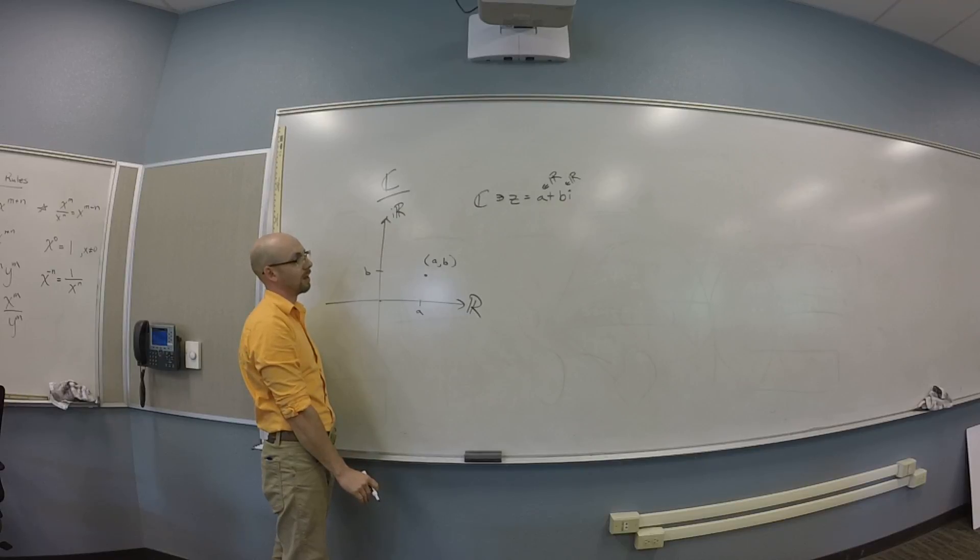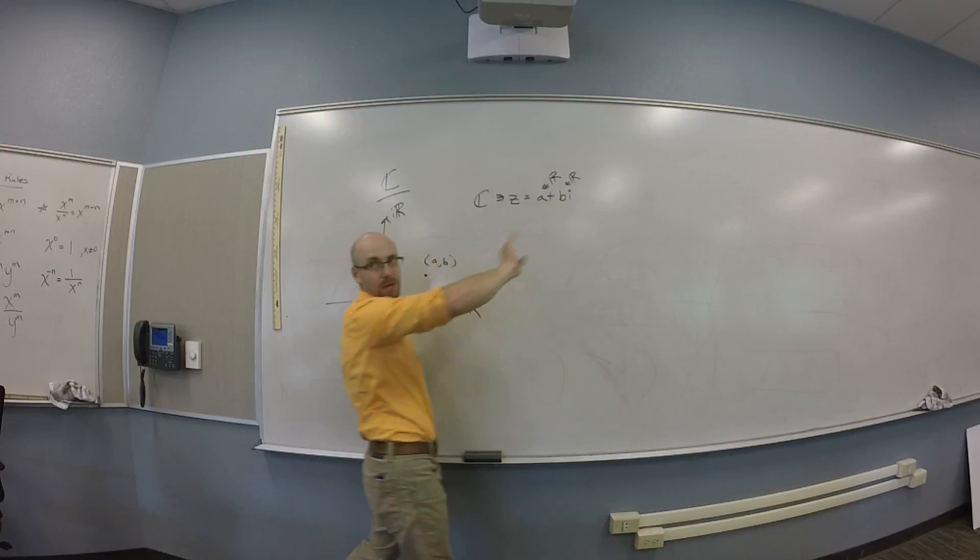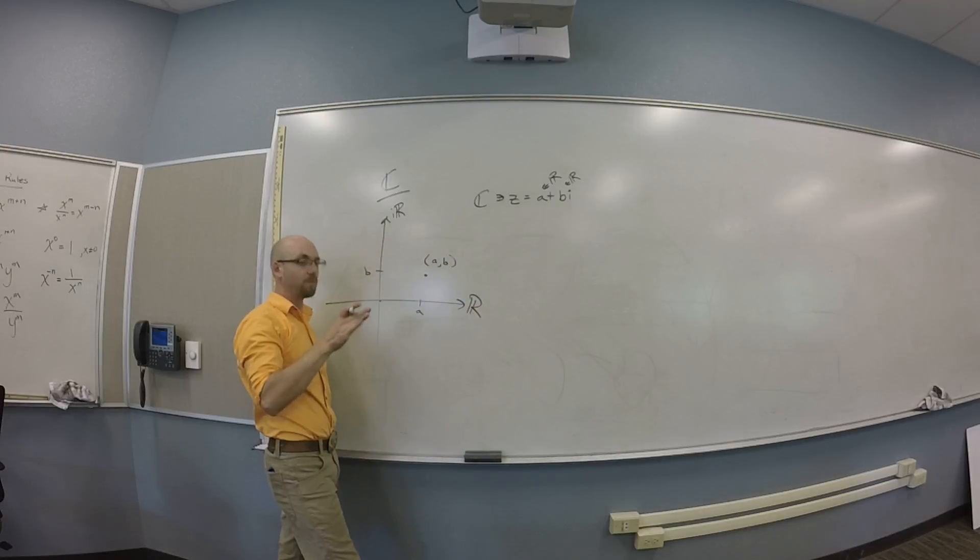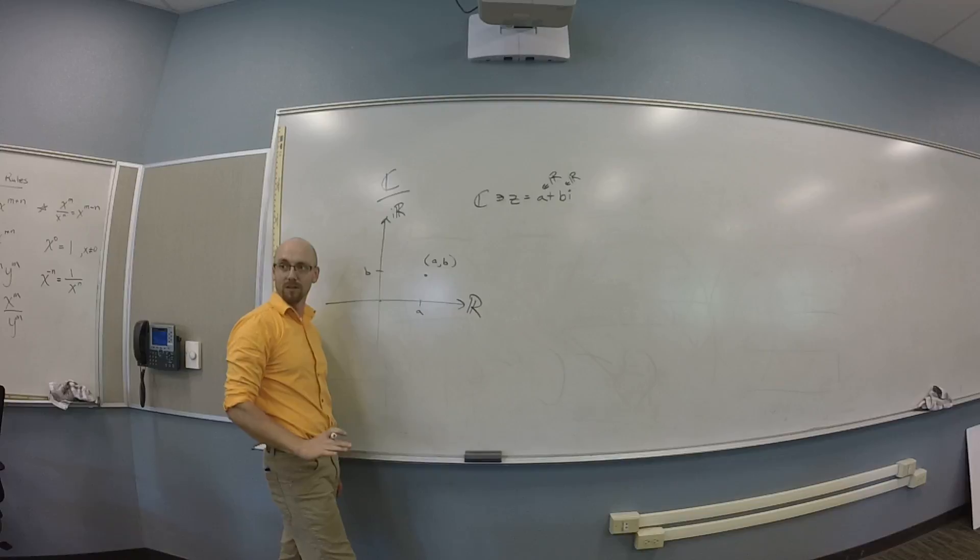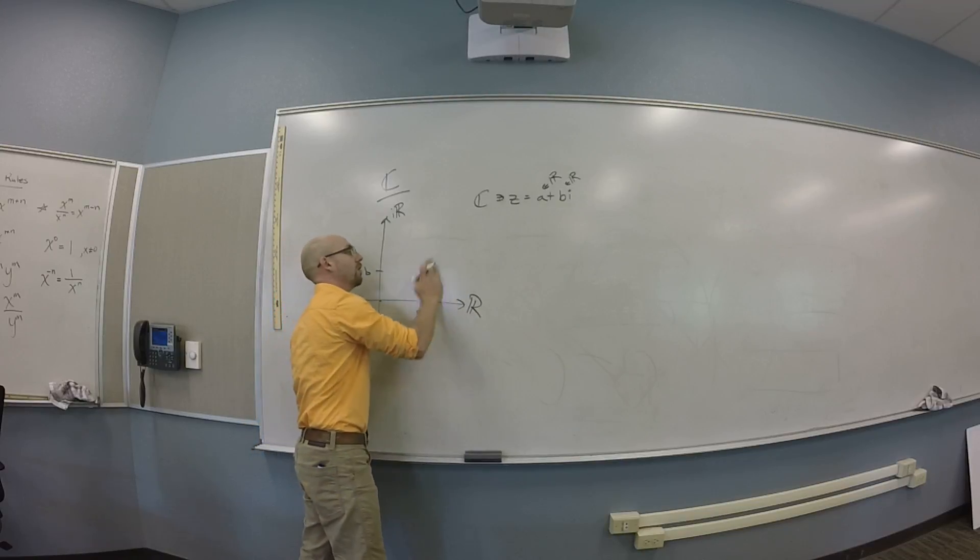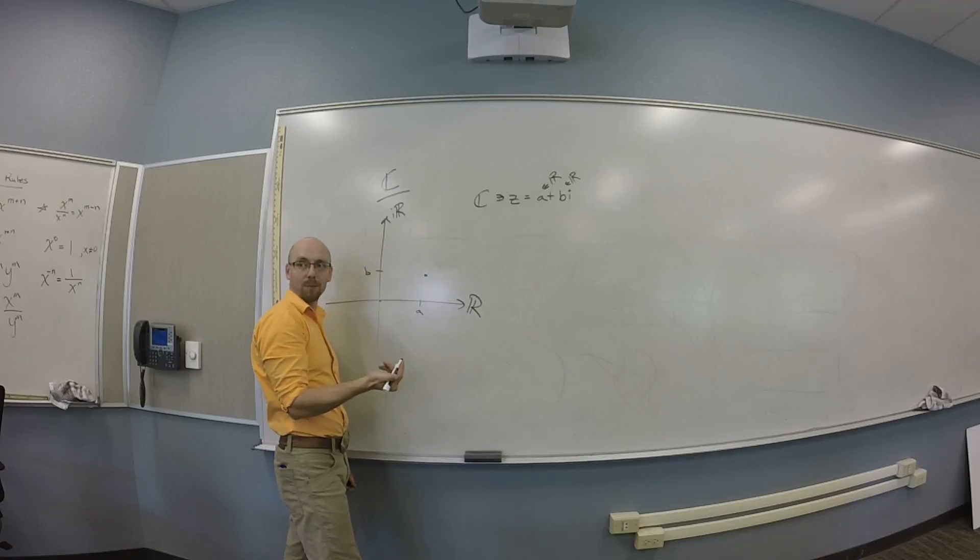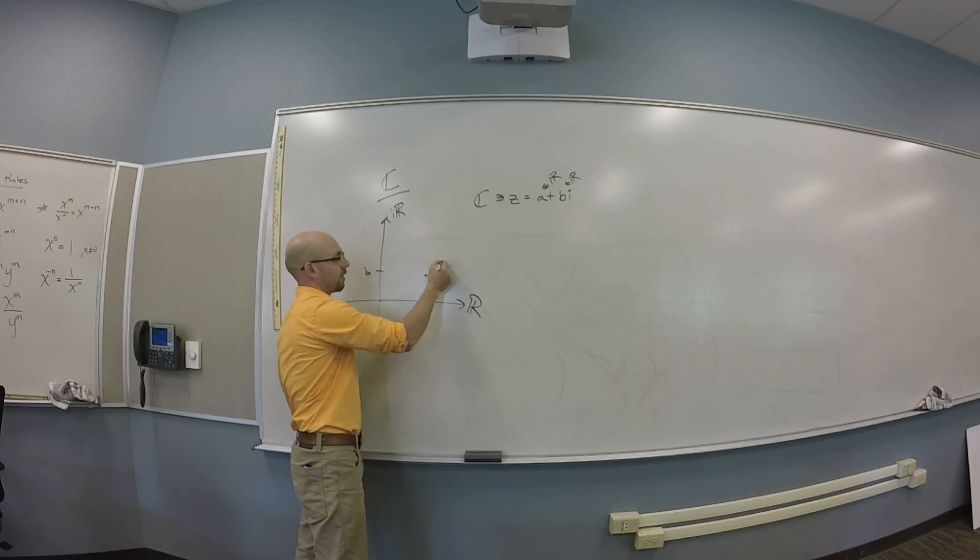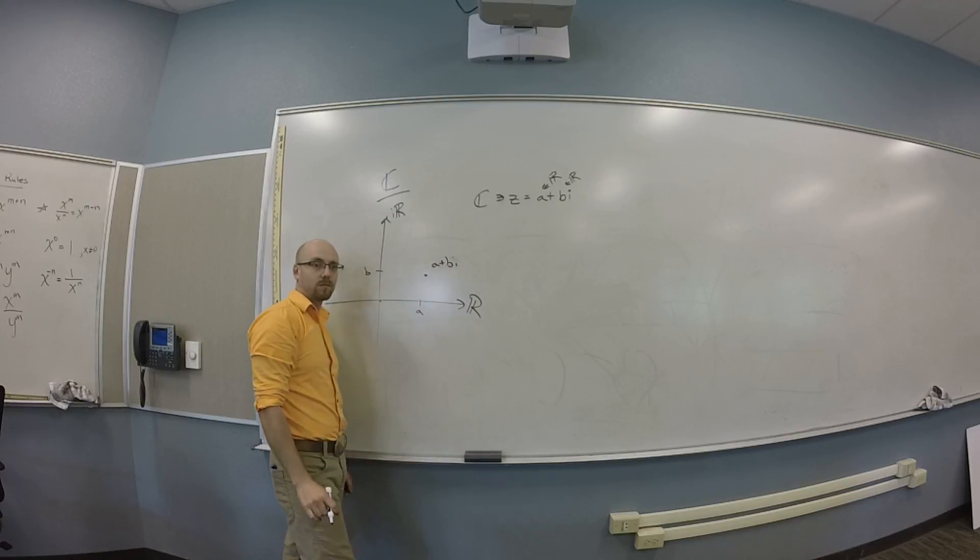I'd be thinking I would really just write that as A plus BI just to drive home that that's exactly where I'm talking about. It's in the complex numbers. It's not a real point. So instead of writing the A comma B, I'm going to write A plus BI. Cool?